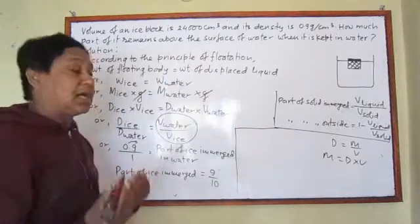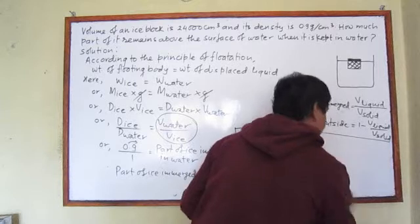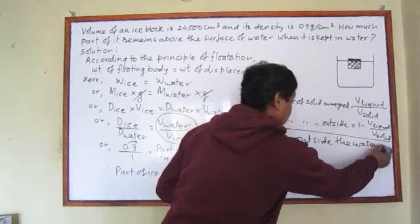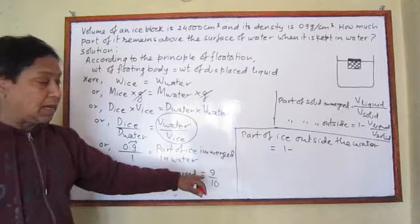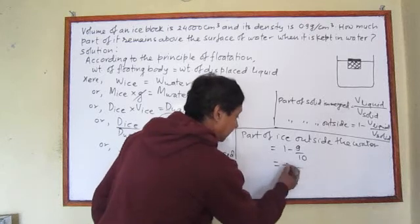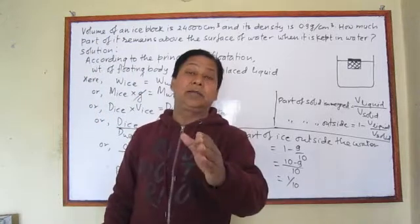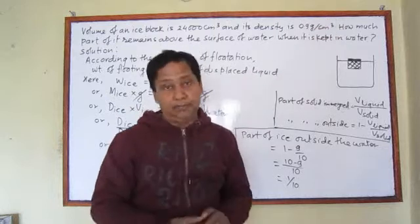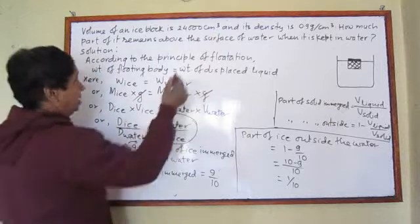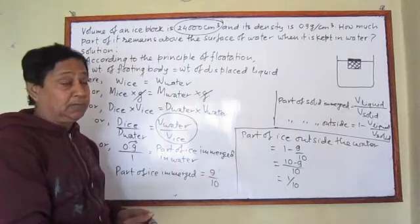Now we calculate what part is outside the water. Part of ice outside the water equals 1 minus 9/10, which equals 10/10 minus 9/10, which equals 1/10. So 1/10 part of this ice block is outside the water. Note that the volume of the ice block was given in this problem, but we didn't even need it — we solved it without using that value.